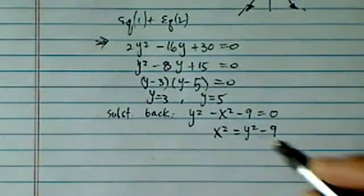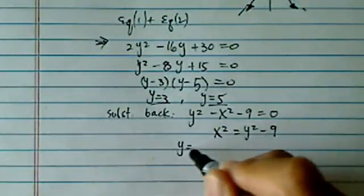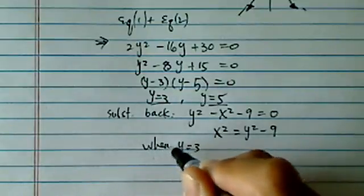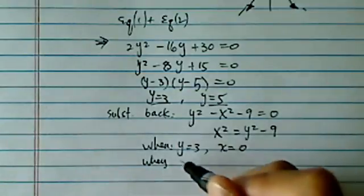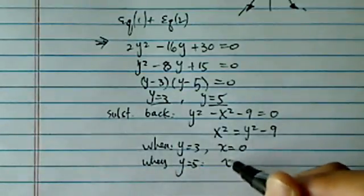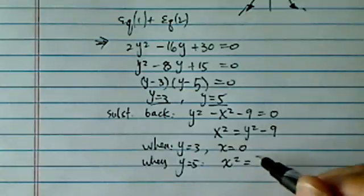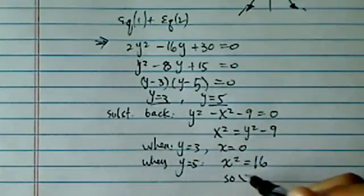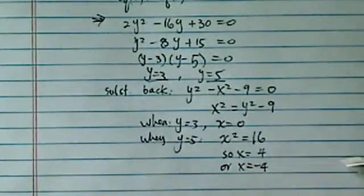So we figured out that y equal to 3, y equal to 5. So when y equal to 3, we have x equal to 0. When y equal to 5, x squared is equal to, let's say 9, 25, 16. So x equal to 4, or x equal to minus 4.